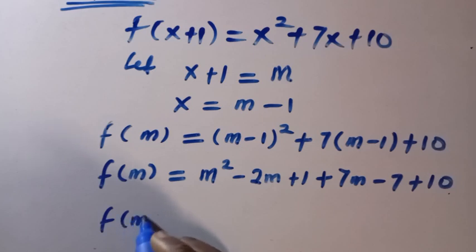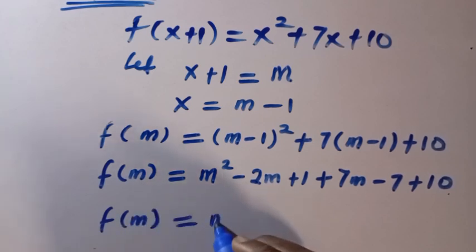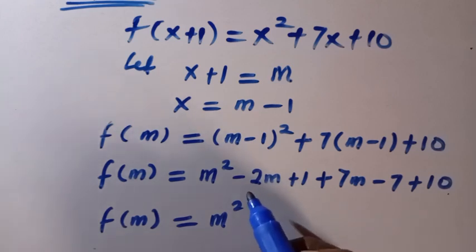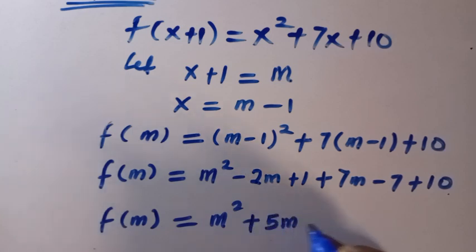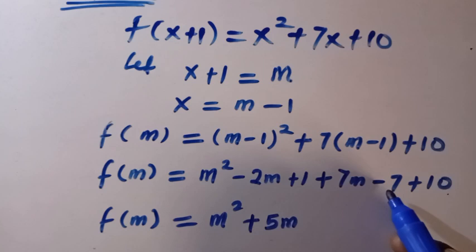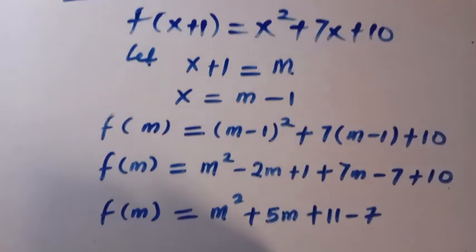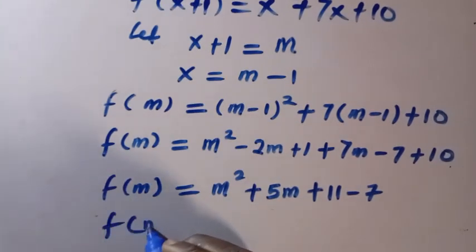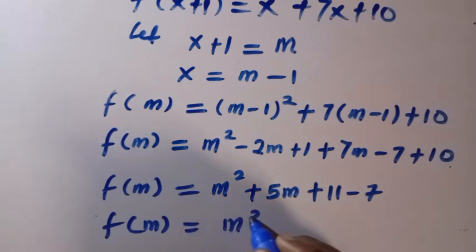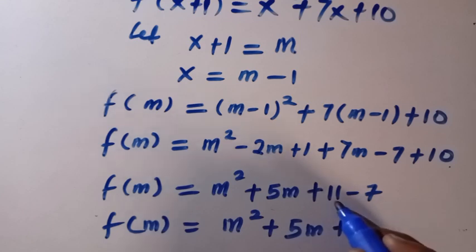1 plus 10, being a constant value, we have this as f of m equals, so we have only m squared from here. Then, here is minus 2m plus 7m, so that gives us plus 5m. Then, here is 1 minus 7 plus 10. So, let's see 1 plus 10 first, 1 plus 10 is 11, then 11 minus 7.